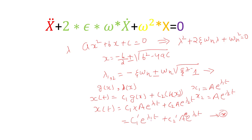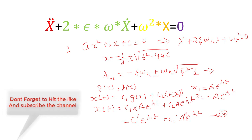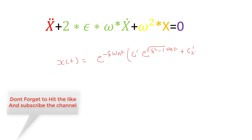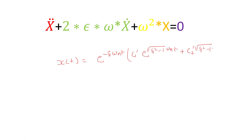Substituting the values of λ1 and λ2: λ₁ = −ζω_n + ω_n√(ζ²−1) and λ₂ = −ζω_n − ω_n√(ζ²−1). The final solution of this second-order homogeneous differential equation can then be written in its expanded form.